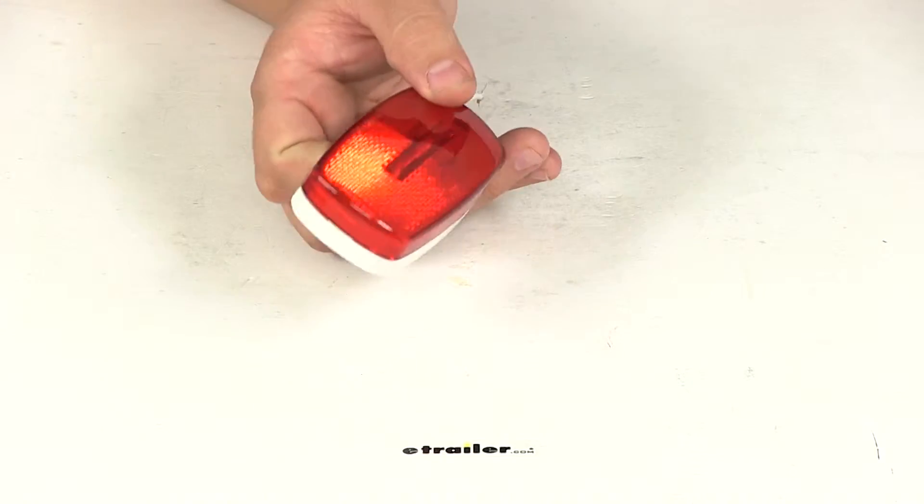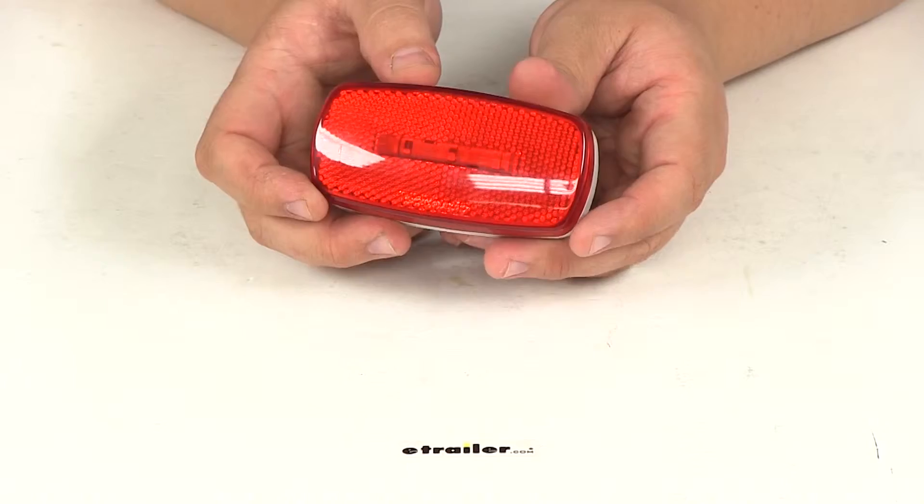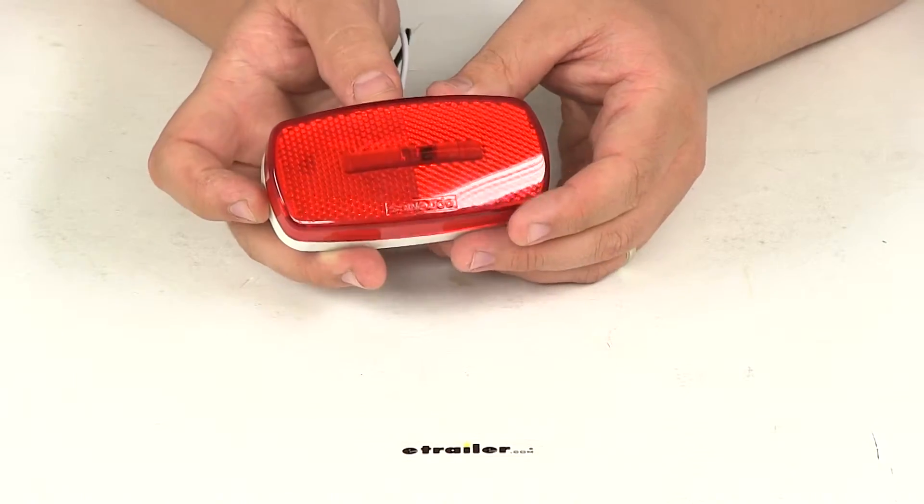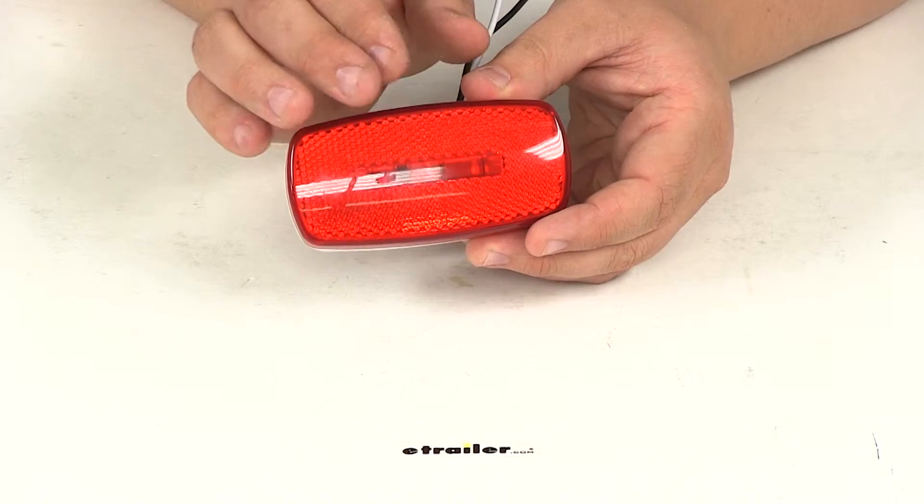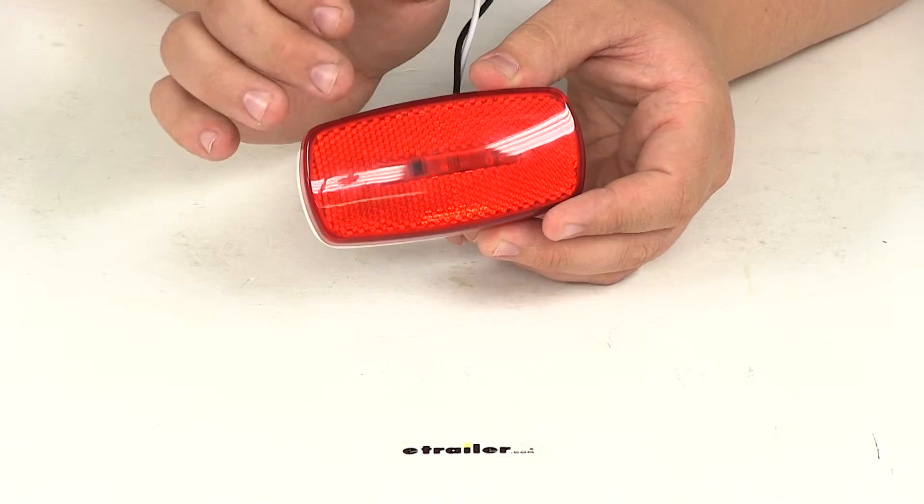The power draw for this light is going to be 0.2 amps at 12.8 volts and Optronics is going to put a lifetime warranty on the LEDs as well as a three-year limited warranty on the housing and the lens.